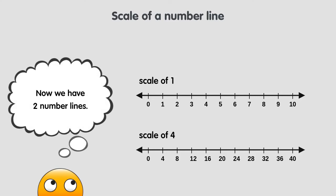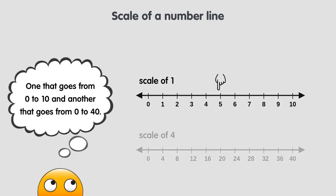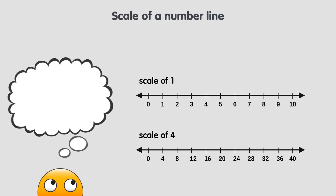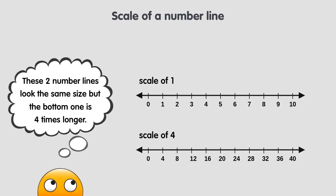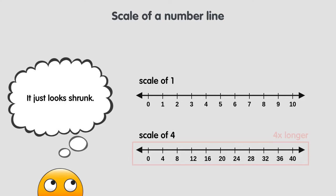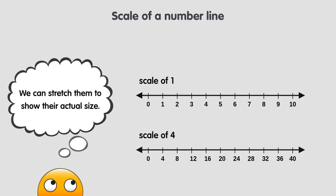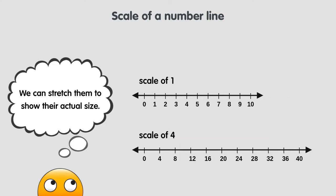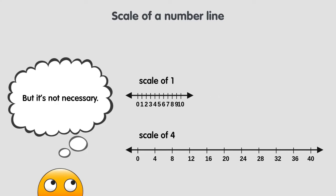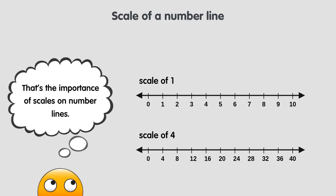Now we have 2 number lines. One that goes from 0 to 10, and another that goes from 0 to 40. Even though these 2 number lines look the same size, the bottom one is actually 4 times longer. It just looks shrunk. We can stretch them to show their actual size, but we don't need to do it. That's the importance of scales on number lines. We don't need more space to draw a larger number line. We only need a larger scale.